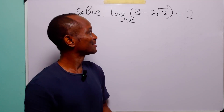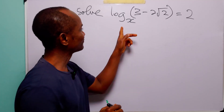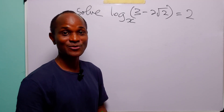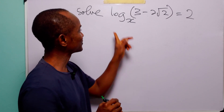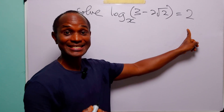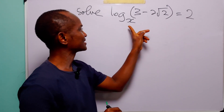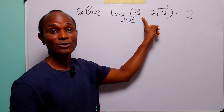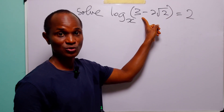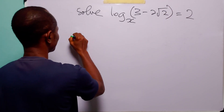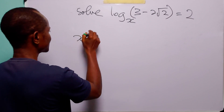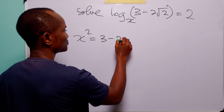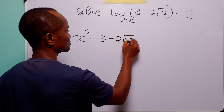Hello and welcome. In this math tutorial we have a logarithmic equation, and to solve this equation we must remember that when we have a statement like this it simply means that x to the power 2 is equal to 3 minus 2 root 2. That is, x squared is equal to 3 minus 2 root 2.